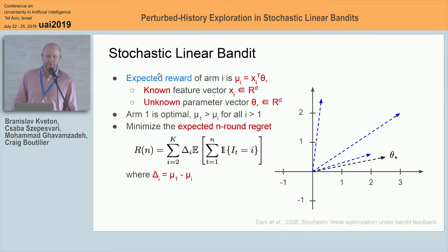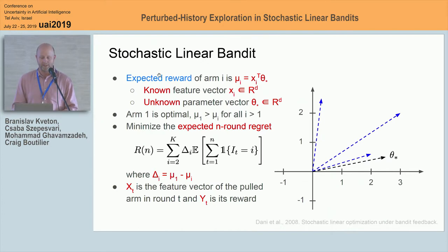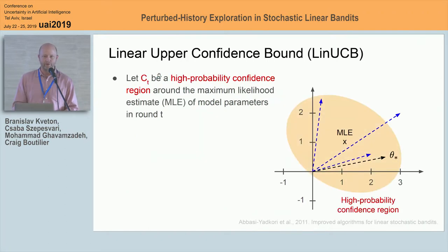I will assume that arm one is optimal without loss of generality, and we maximize the expected end-round reward, which is equivalent to minimizing the expected end-round regret — nothing else but the sum of cumulative losses due to playing suboptimal arms instead of the optimal arm. In the rest of the talk, I'll denote by capital X sub T the feature vector of the pulled arm in round T, and by capital Y sub T the stochastic reward of this pulled arm.